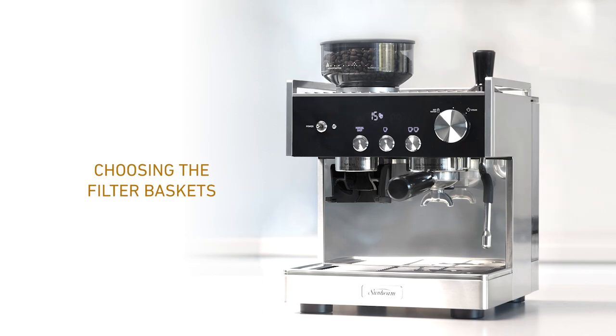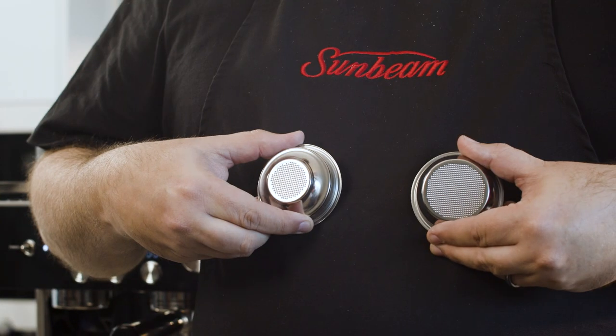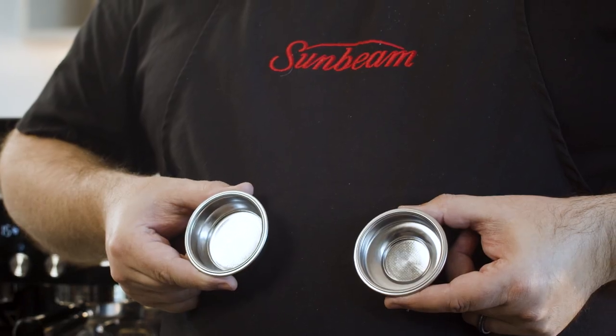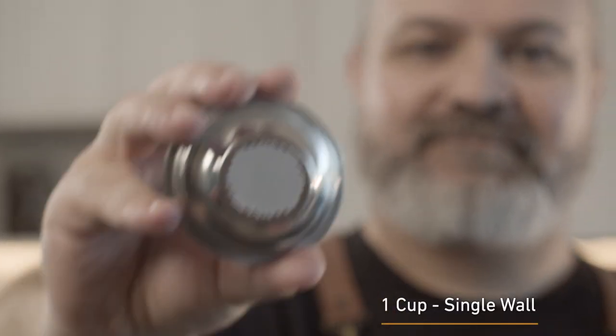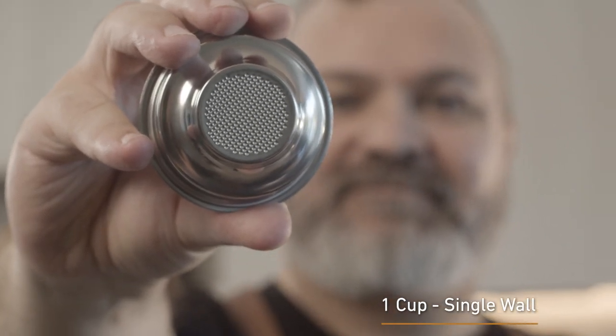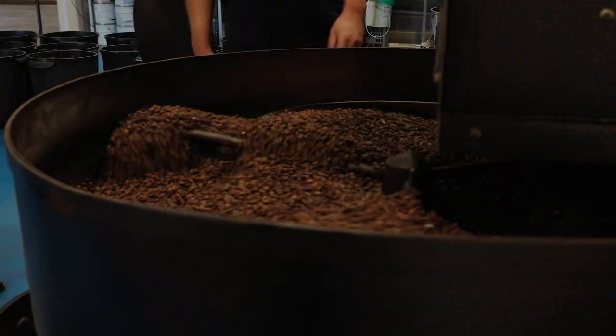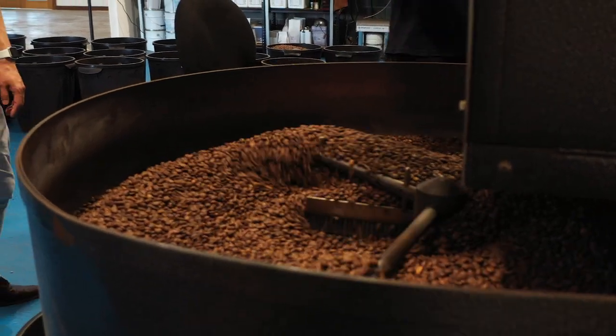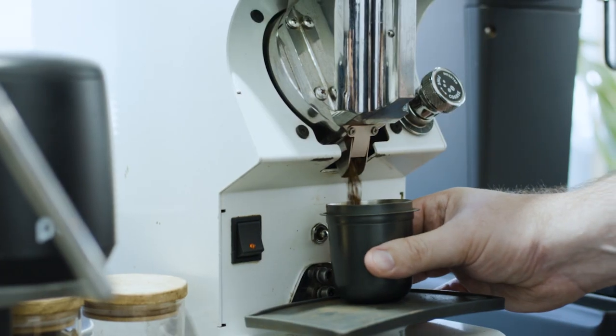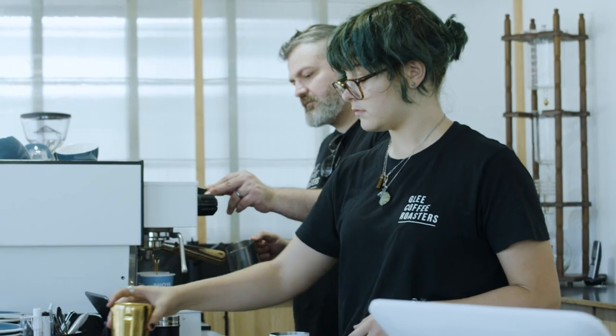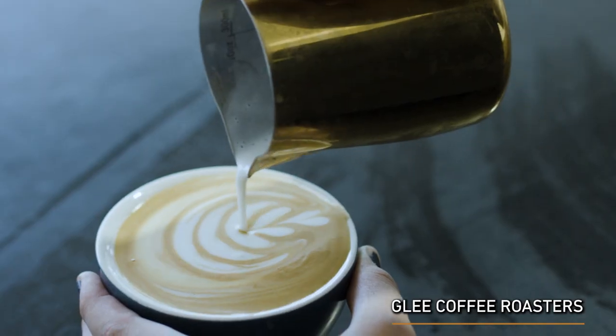Your machine comes with two sets of filter baskets: a single wall and a double wall. Single wall filter baskets are also known as non-pressurized baskets. Single wall baskets work best with freshly roasted coffee. Freshly roasted coffee produces greater resistance to the pump, reducing the need for a dual wall filter. This is also the same type of basket I use in my cafe.